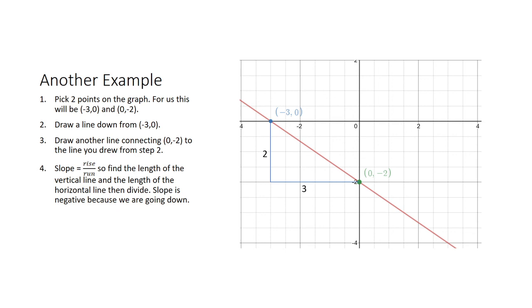The length of the vertical line is two, the length of the horizontal line is three, therefore the slope is negative two over three.